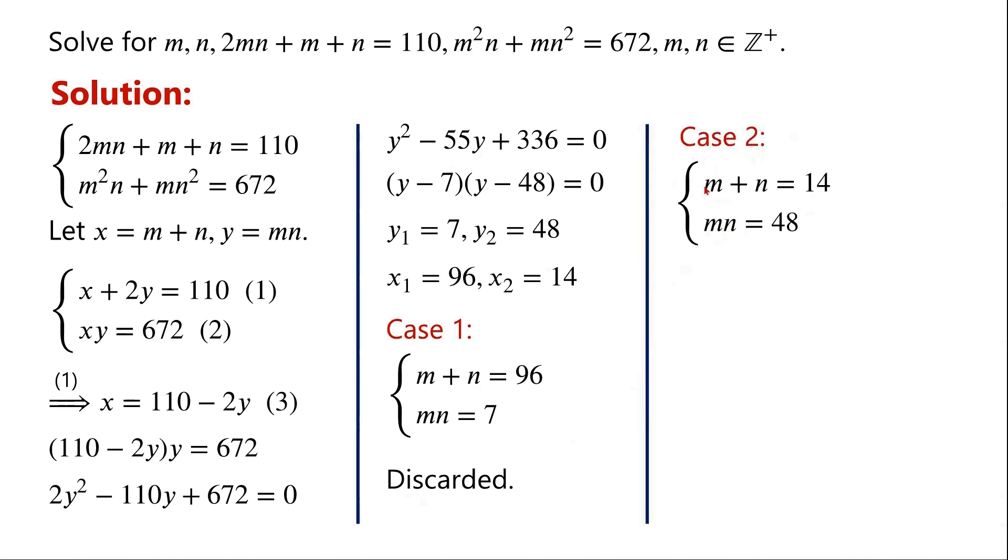Case 2: M plus N equals 14, MN equals 48. By Vieta's formulas, we know that M, N are two roots of this quadratic equation. We can factorize this equation and write T minus 6 times T minus 8 equals 0. So T1 equals 6, T2 equals 8.